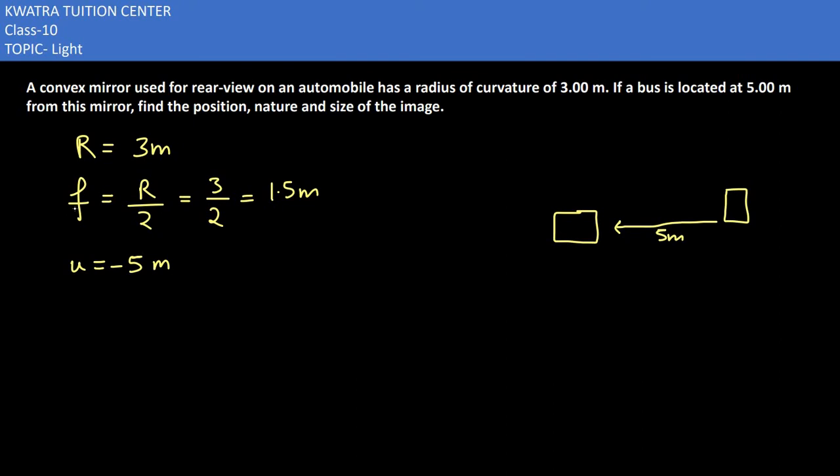Now we will use the mirror formula: 1/v + 1/u = 1/f. One by v equals... we substitute u equals negative 5 and f equals 1.5.